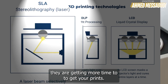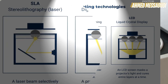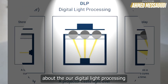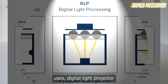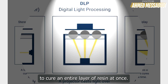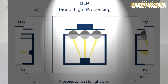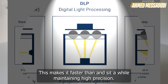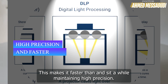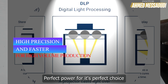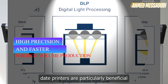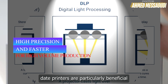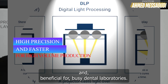DLP, or digital light processing, uses a digital light projector to cure an entire layer of resin at once. This makes it faster than SLA while maintaining high precision, making it a perfect choice for high-volume production. DLP printers are particularly beneficial for busy dental laboratories.